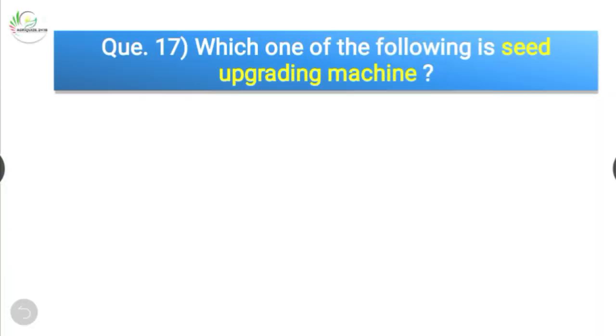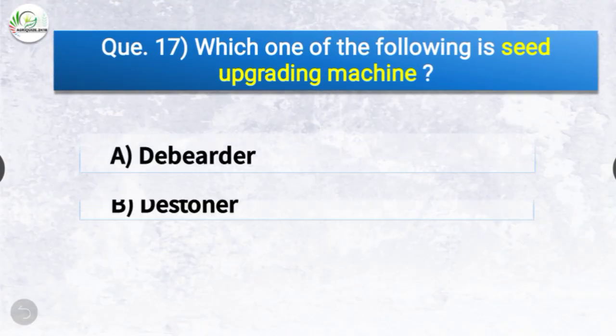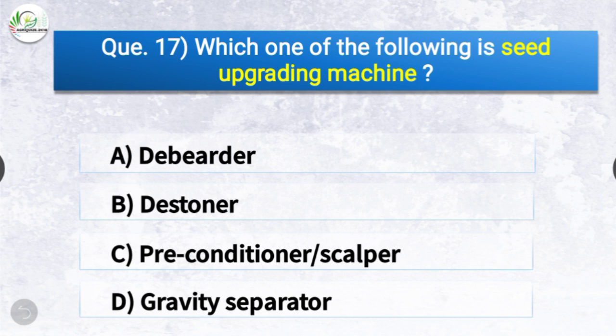Question number seventeen: Which one of the following is a seed upgrading machine? The options are de-burrer, de-stoner, pre-conditioner/scalper, or gravity separator. The correct answer is option D — gravity separator. Gravity separator is a seed upgrading machine.